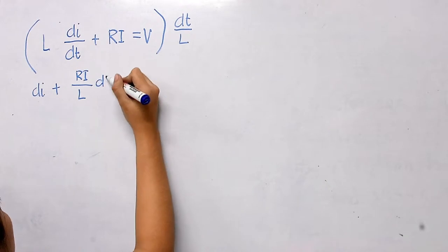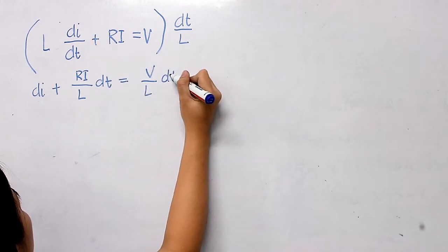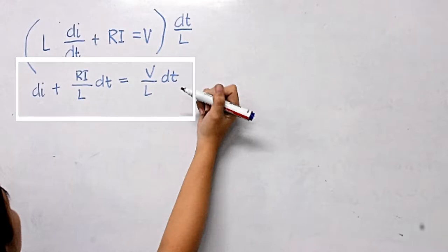With the equation we have, we arrive at a linear equation which is di/dt plus (R/L)i equals V/L.